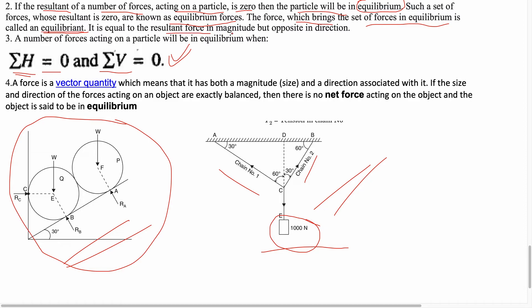The equilibriant is equal to the resultant force in magnitude but opposite in direction. This is a very important point. A force is a vector quantity, which means that it has both magnitude and direction associated with it. If the size and direction of the forces acting on an object are exactly balanced, then there is no net force — and the body or system is in equilibrium.